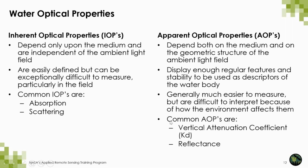Typical AOPs measured in the field or with remotely sensed data are vertical attenuation coefficients, reflectance, upwelling radiance, and remote sensing reflectance. One important thing to mention is that a change in the sea surface wave state or even in the sun's position changes the radiance distribution and therefore affects the AOPs, even though the IOPs remain unchanged.